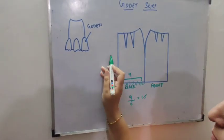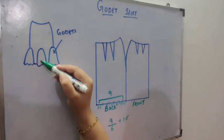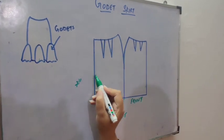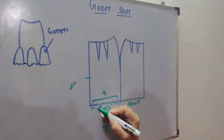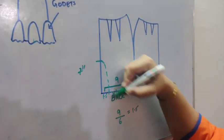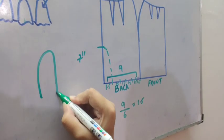Now it totally depends on me what kind of design and what kind of length I want for this Godet. So suppose I take 7 inches. I will mark 7 inches and then I will join with this 1.5.